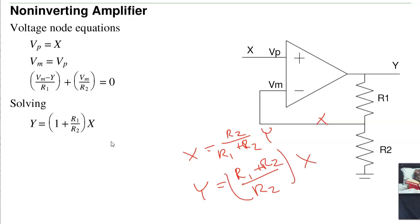And if you simplify, it's 1 plus the ratio R1 over R2 times X. So this is an amplifier where the gain is at least 1. It's 1 plus the ratio R1 over R2.